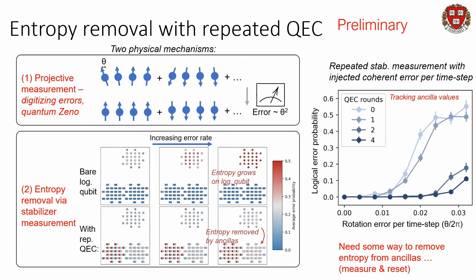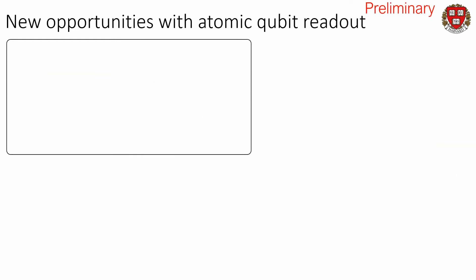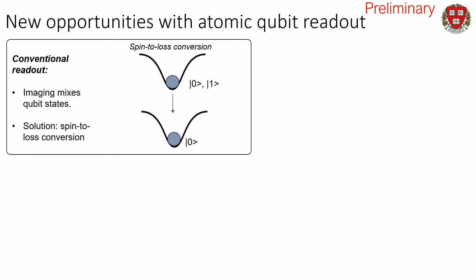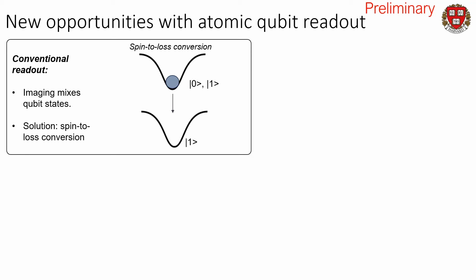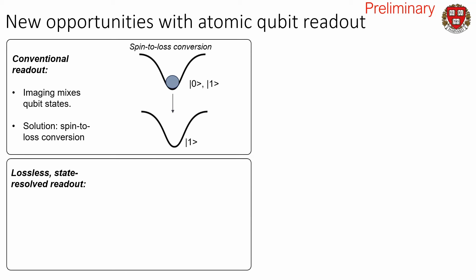We would like to use repeated error correction in order to do deeper circuits. We need to be able to reuse our atoms because otherwise we start to run out of atoms quickly as we do entropy removal. In conventional atomic readout, there's a major challenge: imaging your qubit states often mixes them together, and zero and one get intermixed. What we do is convert one of the two spin states to loss — take qubit state one and eject it from the tweezer. Now we just image whether the atom is there or not there, which we can do with high fidelity. But the problem is that we get rid of a large fraction of our atoms. So we'd really like to measure our ancillas without losing them.